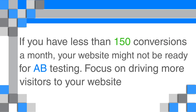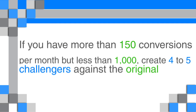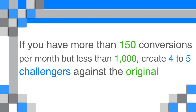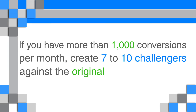Keep the following rules in mind. If you have less than 150 conversions a month, your website might not be ready for A-B testing — focus on driving more visitors through SEO, social media, or paid traffic. If you have more than 150 but less than 1,000 conversions per month, create 4 to 5 challengers against the original. If you have more than 1,000 conversions per month, then create 7 to 10 challengers against the original.